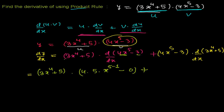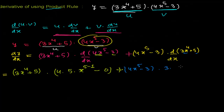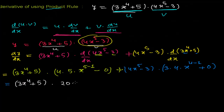Now for the second part: (4x⁵ - 3) times the derivative of (3x⁴ + 5). Here, 3 is a coefficient so I write it outside. Applying the power rule to x⁴: bring the power down gives 4x³. The derivative of the constant 5 is 0. So this gives us: (3x⁴ + 5)(20x⁴) + (4x⁵ - 3)(12x³).